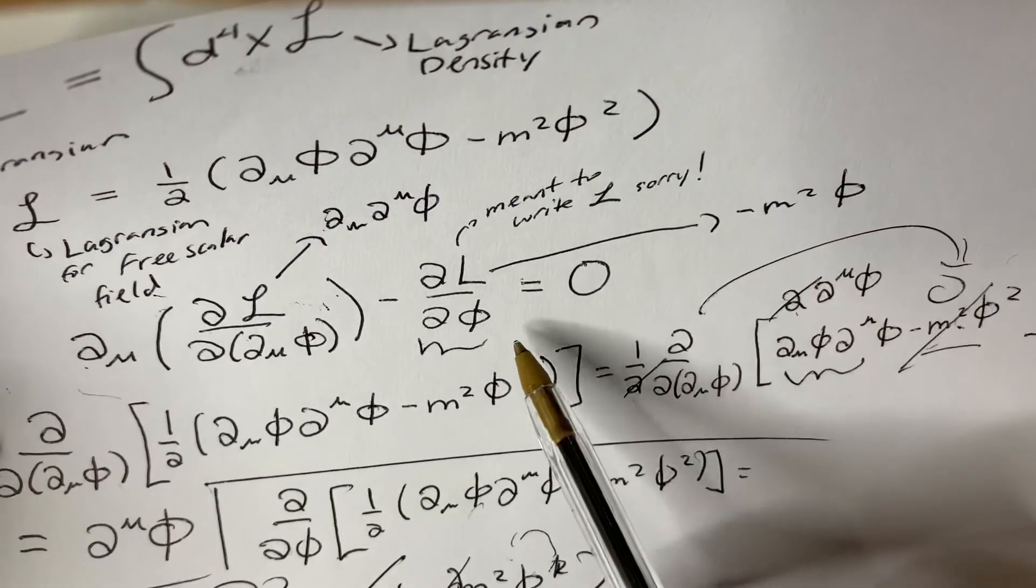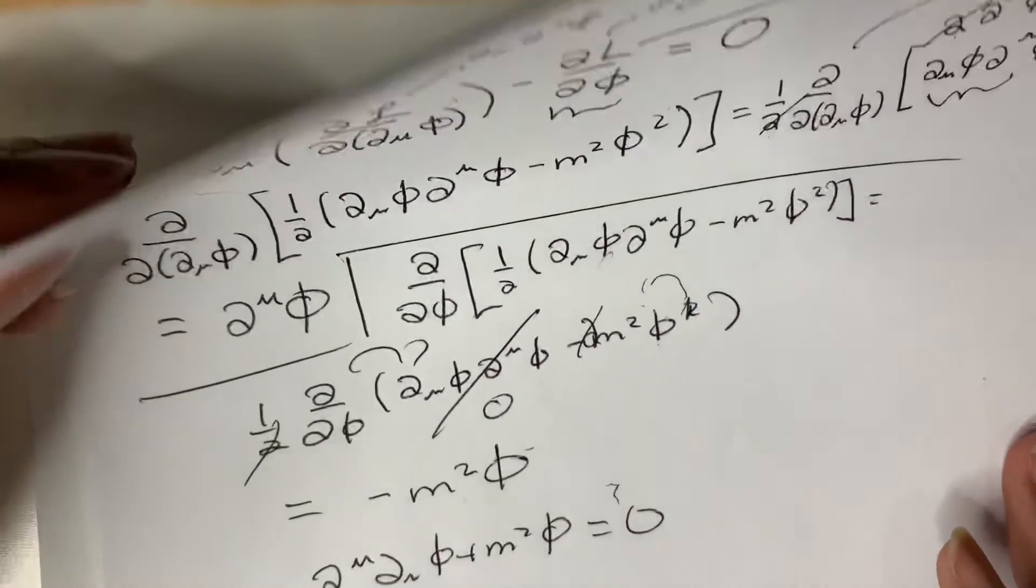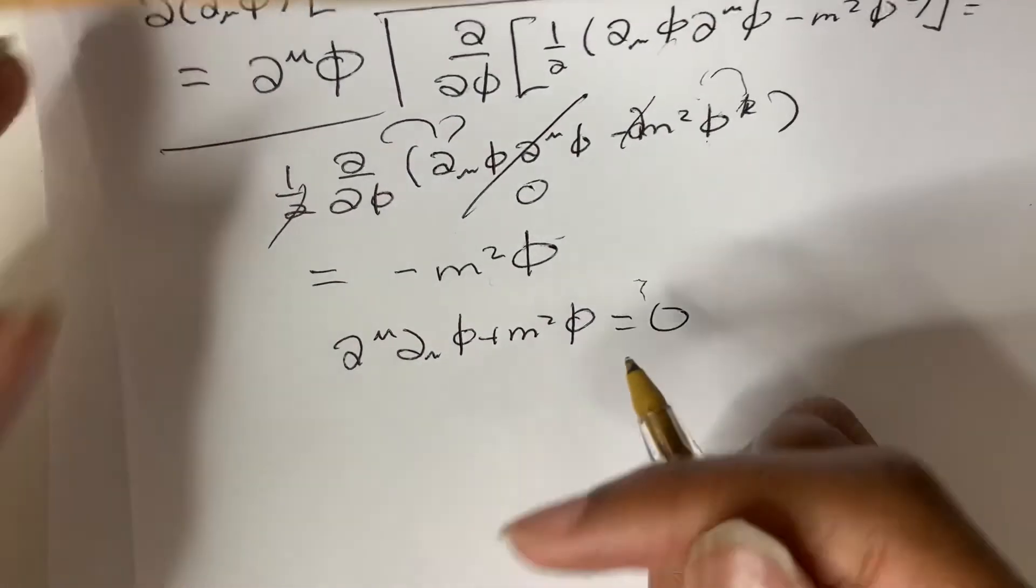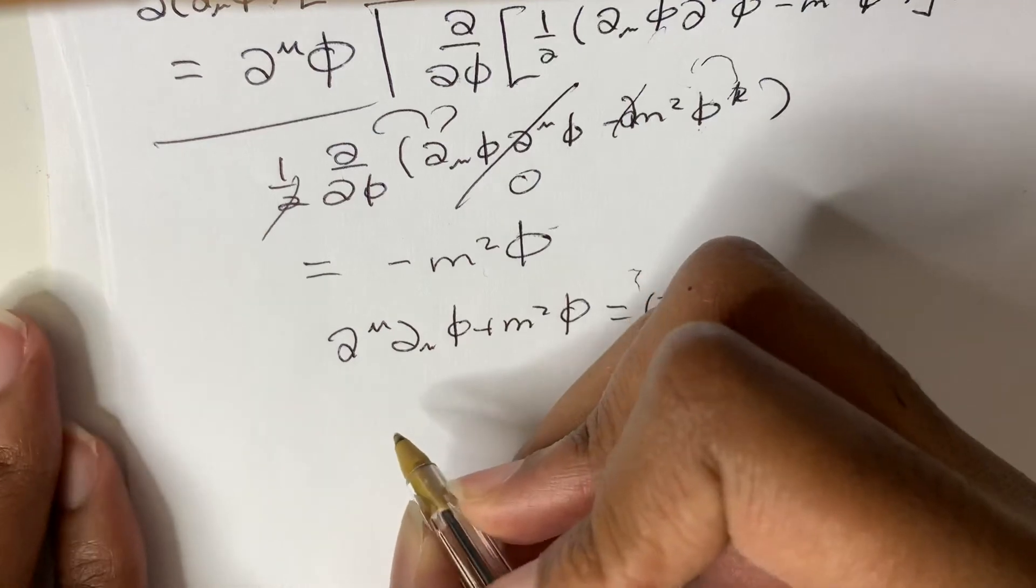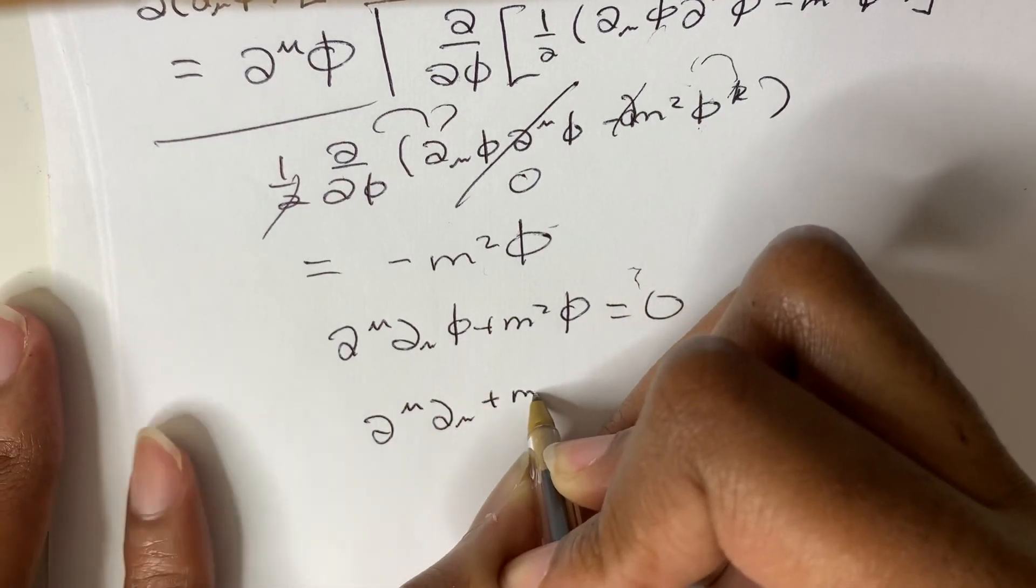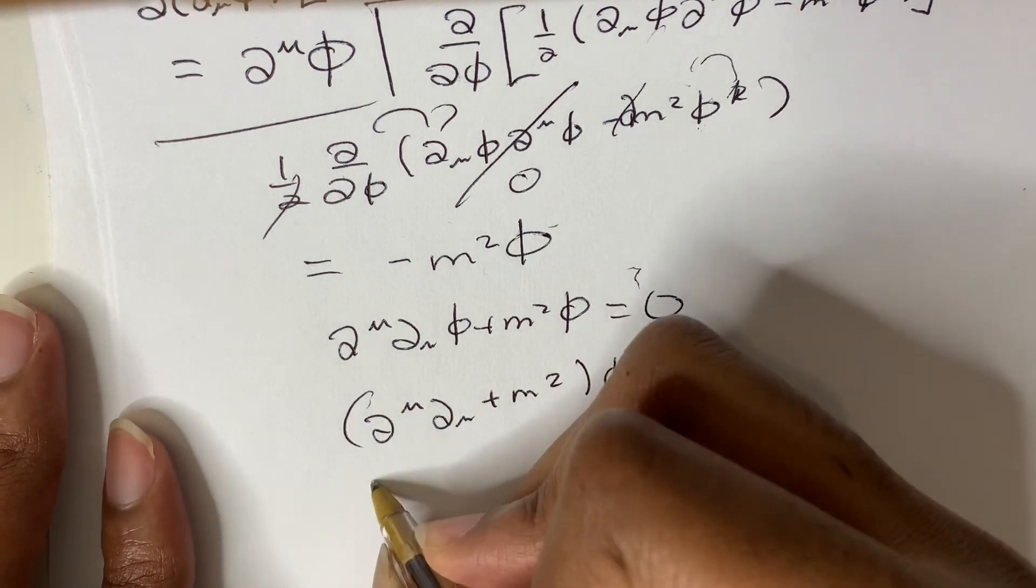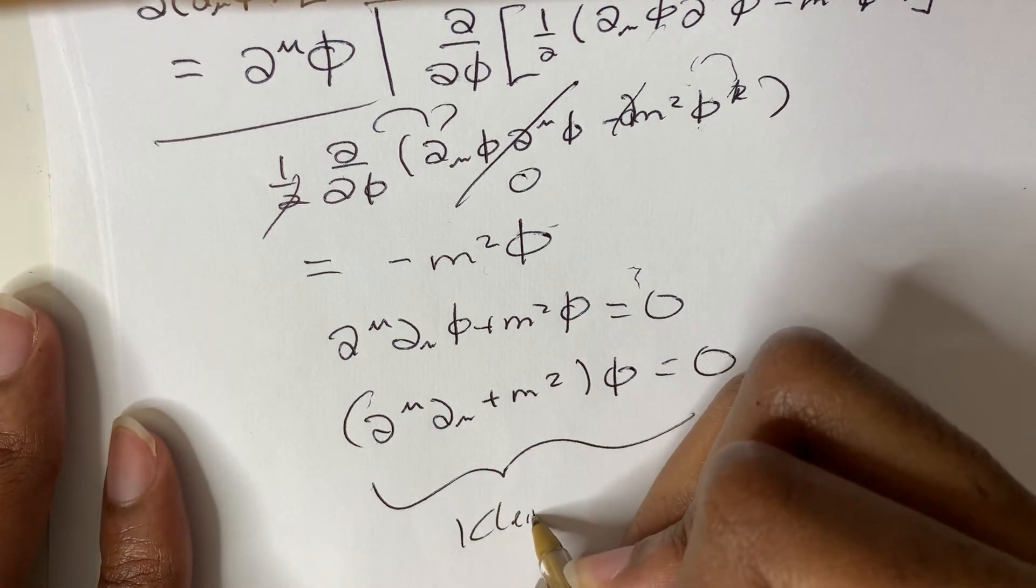So we can actually factor out the phi. And we have our Klein-Gordon equation.